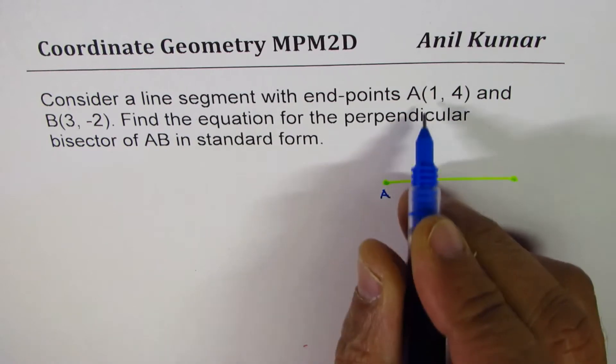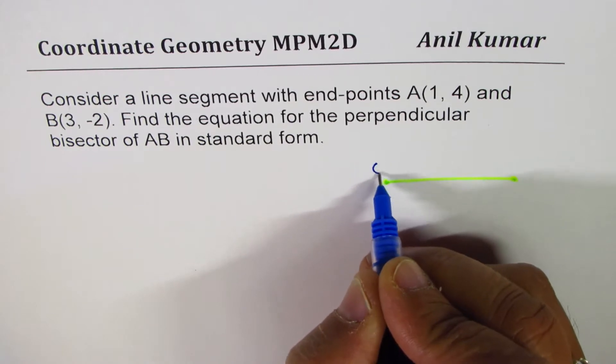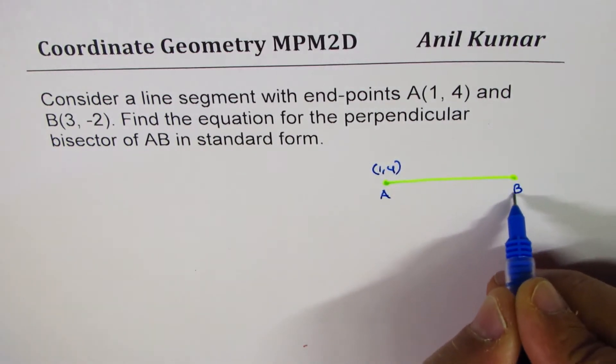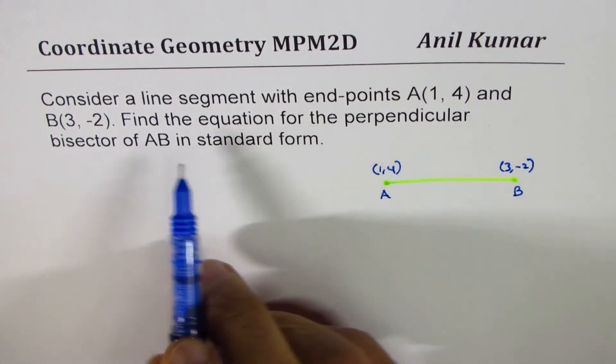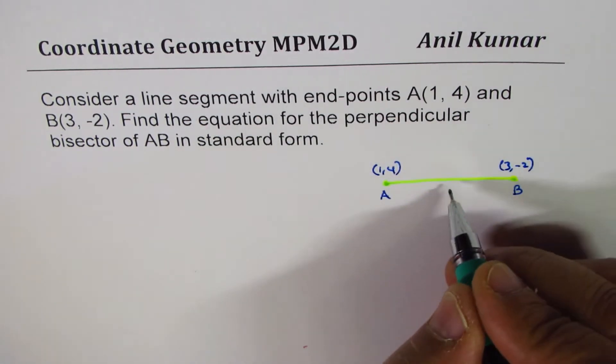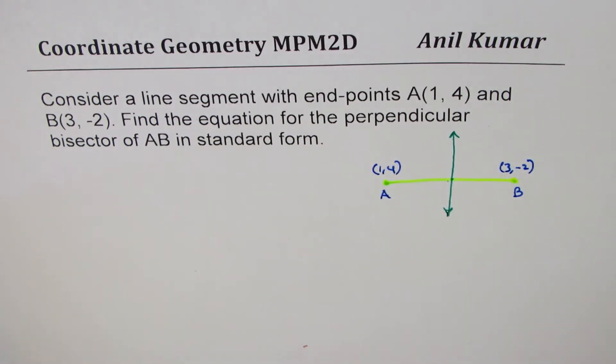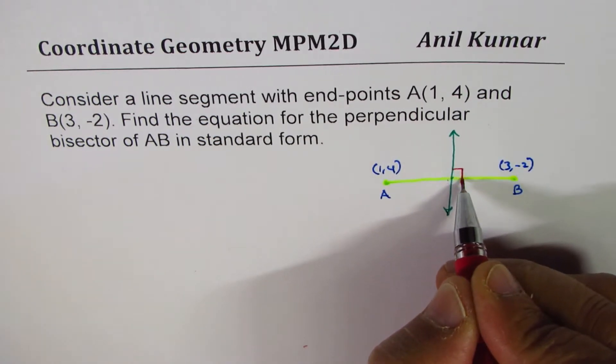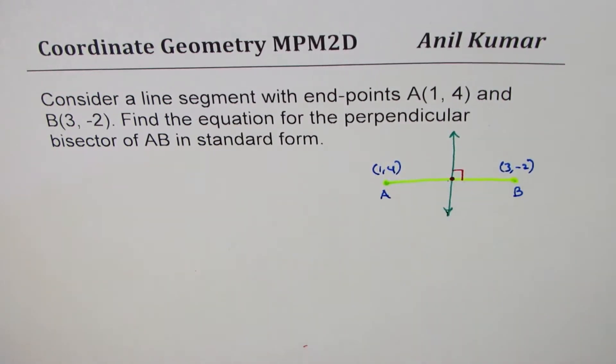I prefer to write A here. A coordinates are 1 and 4 for us and for B, the coordinate points are 3 and minus 2. So, we need to find equation of a perpendicular bisector. That really means a line which goes through the midpoint and is perpendicular. So, that is the line we are interested in finding. Slope of this perpendicular bisector has to be negative reciprocal of that of AB and it has to go through the center of line AB. That is what you need to do.